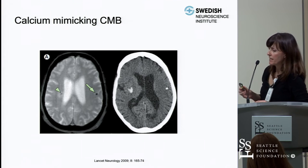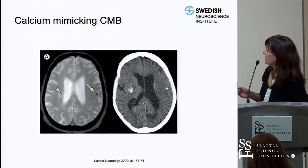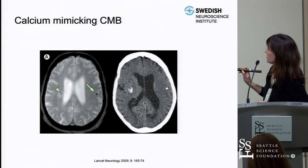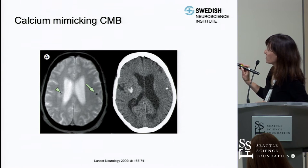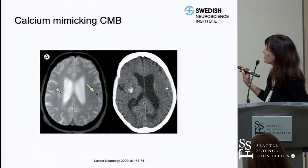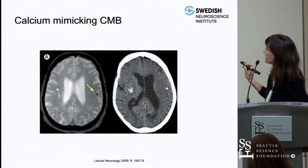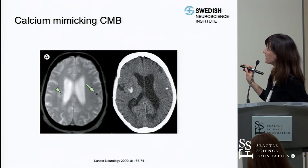This is an example of what you don't want to call a microbleed. On the left is what looks like a cerebral microbleed — a hypointense lesion on gradient echo. But on the right, there is calcification in that region on CT scan, so that would not be considered a microbleed.